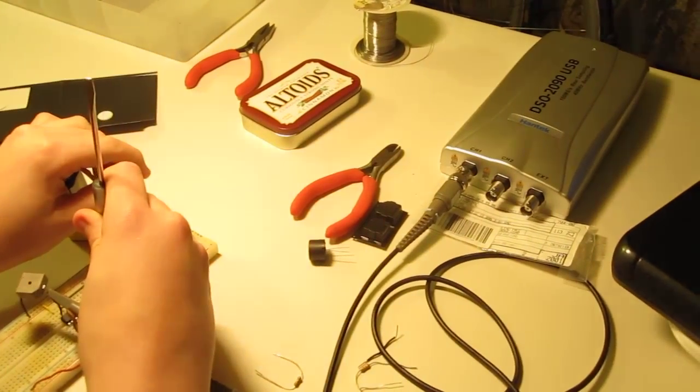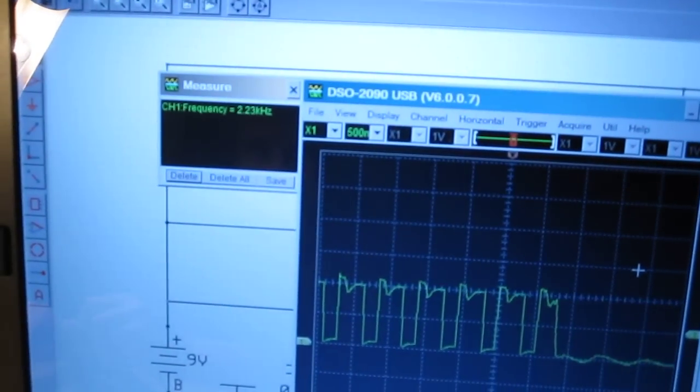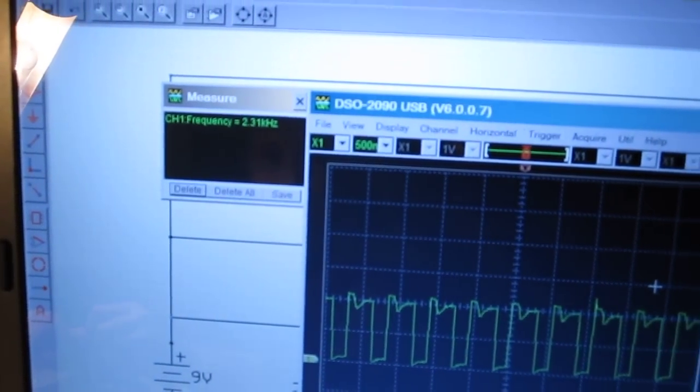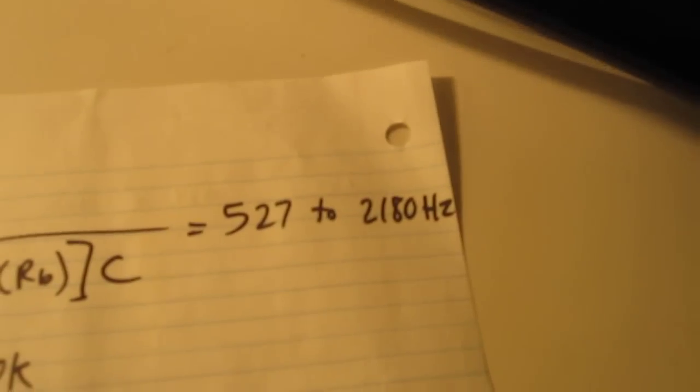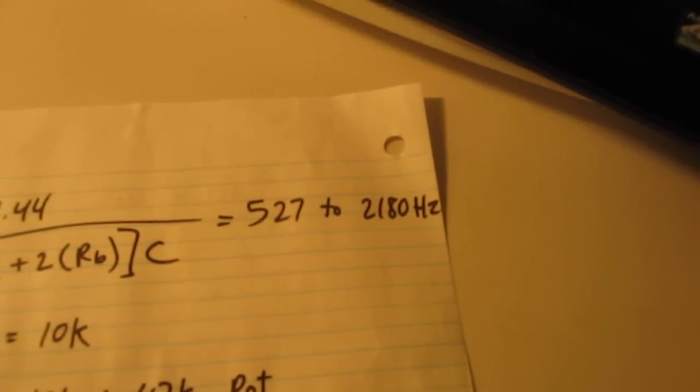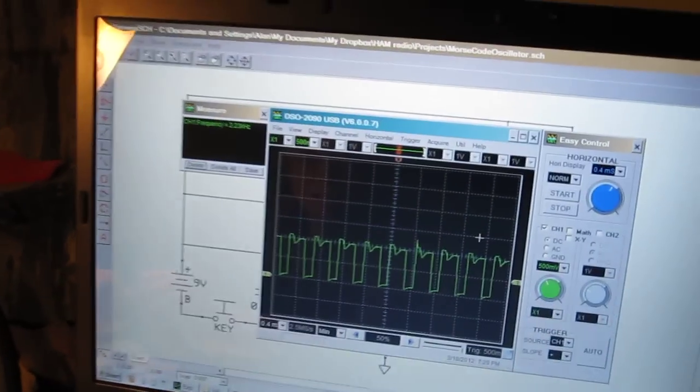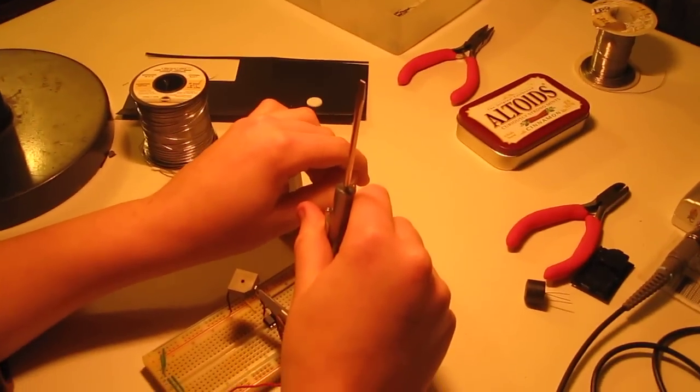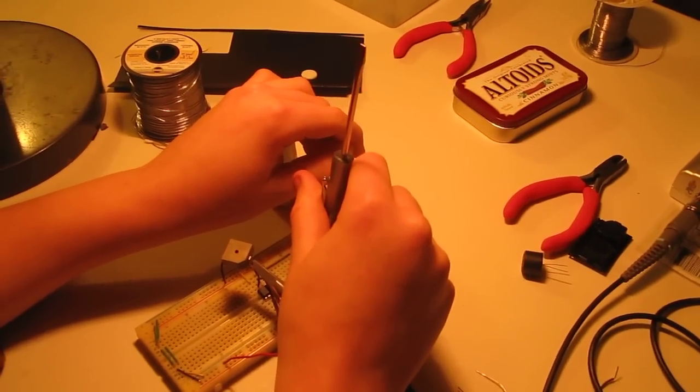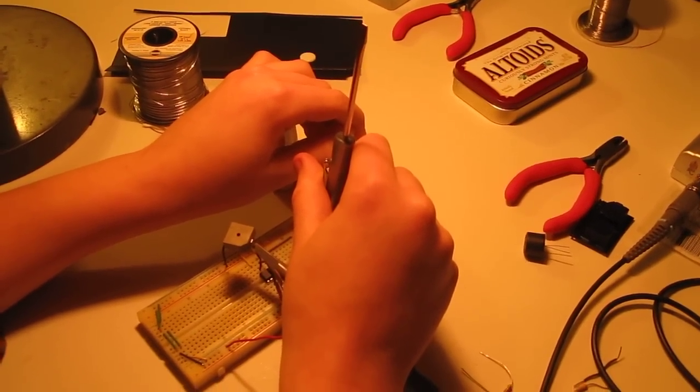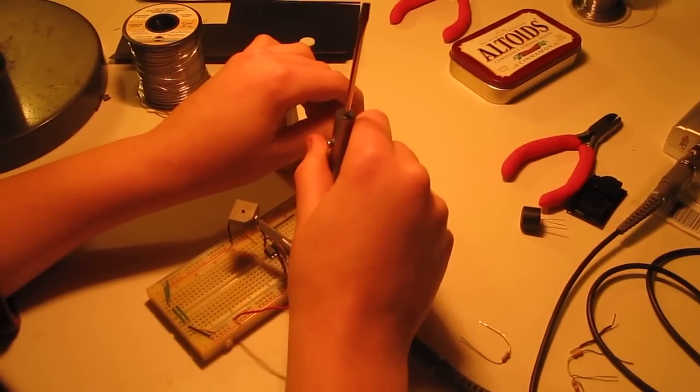Turn it up all the way to the highest frequency. 2.31 kilohertz versus 2.18 kilohertz calculated. So that's not too far off. And this buzzer is set up for 2.4 kilohertz. So it's definitely louder at this frequency.